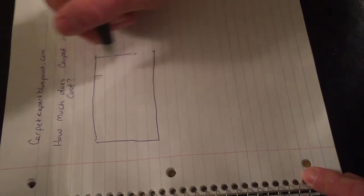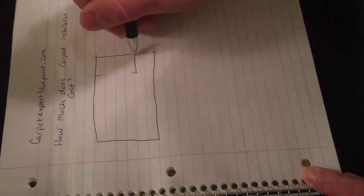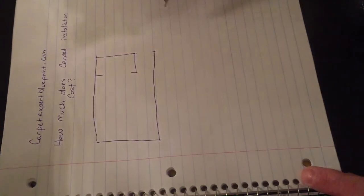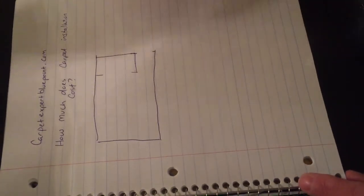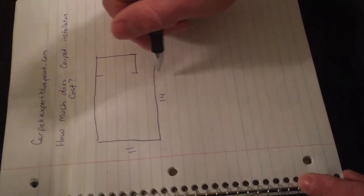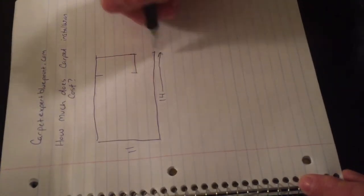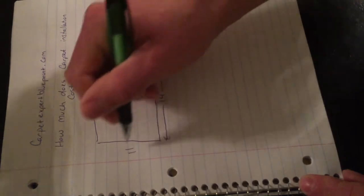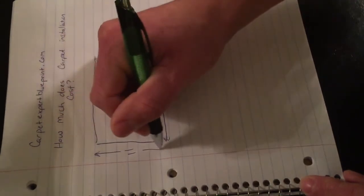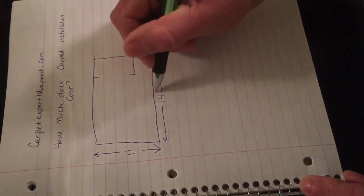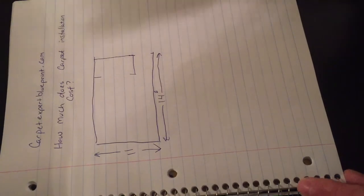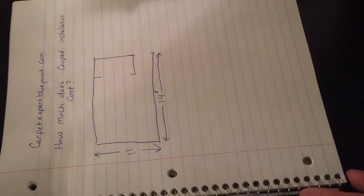In this video I'm just going to base it on a standard bedroom and we're going to assume you already have the carpet or you're going to buy the carpet and you just need the carpet installer to show up and put the product in for you. So let's say this is a standard bedroom here. We're going to say it's 11 feet wide by 14 feet 6 inches long. That's pretty standard on a midsize bedroom.